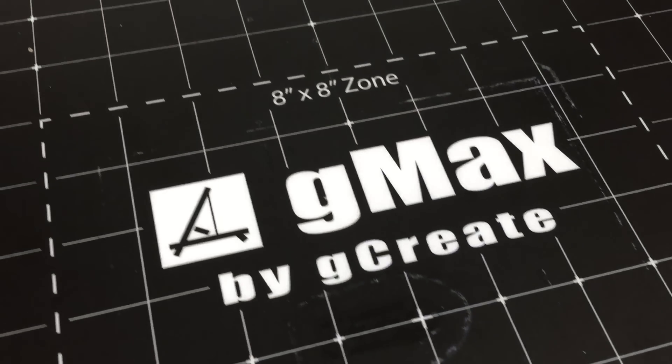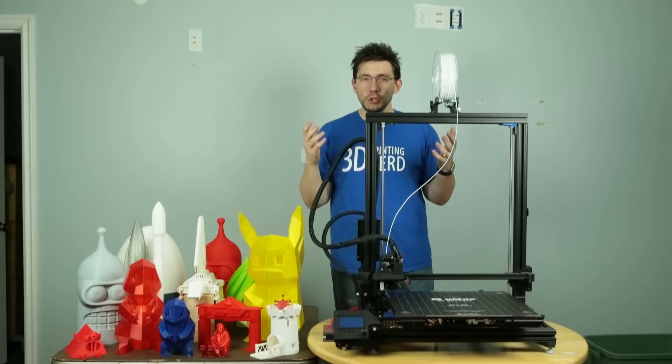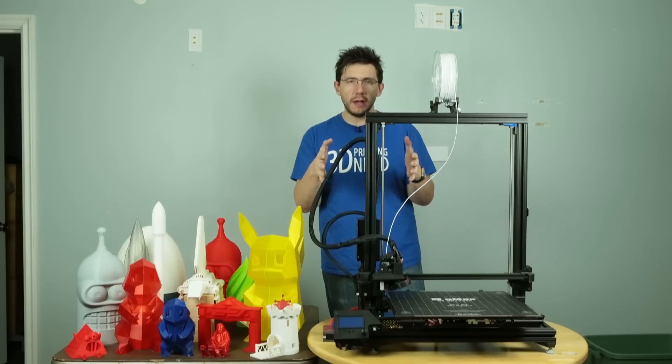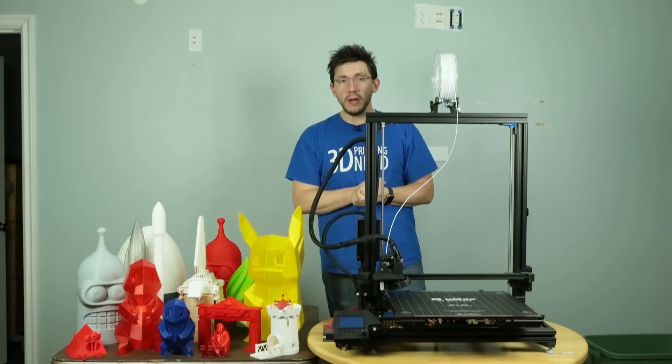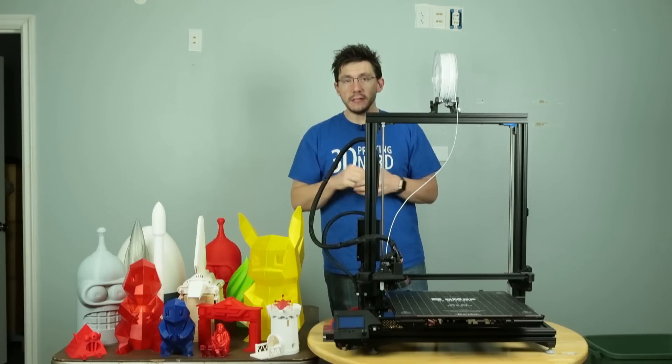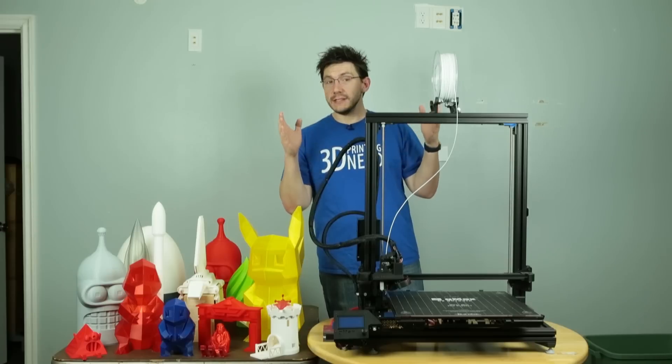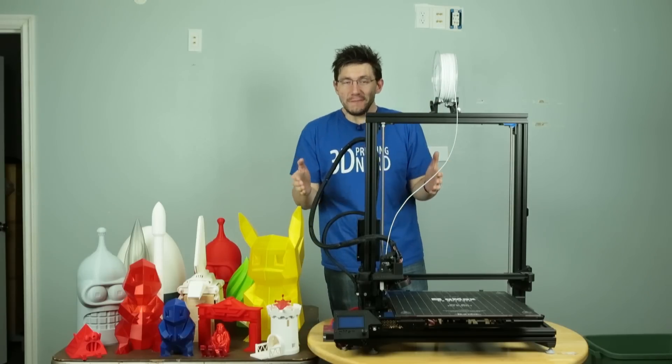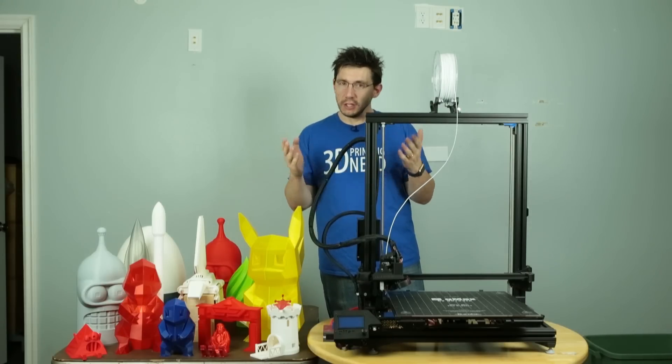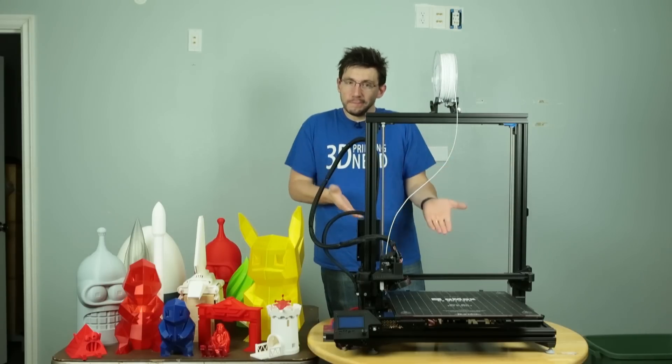This switch allows you to turn on one of two zones. The middle 8 by 8 square is zone one, and the 16 by 16 inch square is zone two. So if you're printing and just need the smaller area in the middle, you can turn off the outer area and save yourself quite a bit of energy. In my tests, the 8 by 8 area consumes 250 some odd watts of power, whereas the full 16 by 16 build plate heating up consumes roughly 870 watts of power.